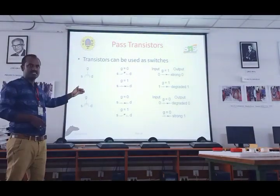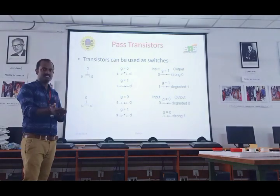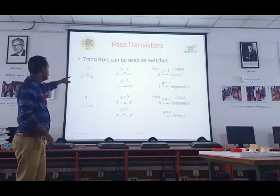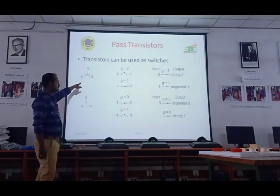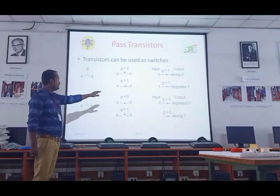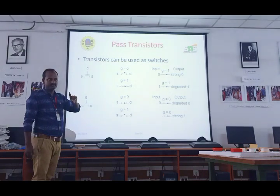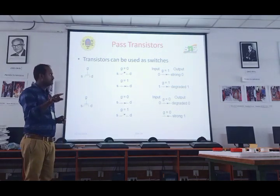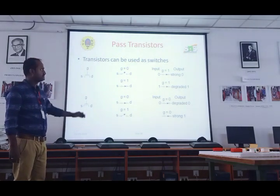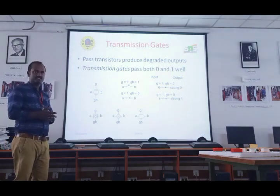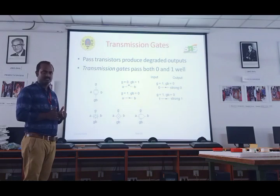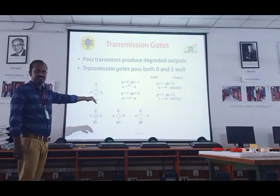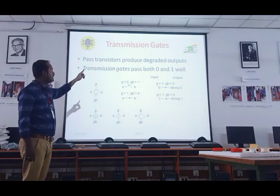Next, we discussed about the pass transistor. Pass transistor simply passes the transistor-level logic, either 0 or 1. NMOS passes strong 0, PMOS passes strong 1. NMOS is enabled when the input is 1, PMOS is enabled when the input is 0. Remember: bubble means PMOS, bubble means 0. Pass transistor produces a degraded output — that is why we go for the transmission gate. So the disadvantages of pass transistor are overcome in the transmission gate, because the transmission gate passes either 0 or 1 based on our selection.